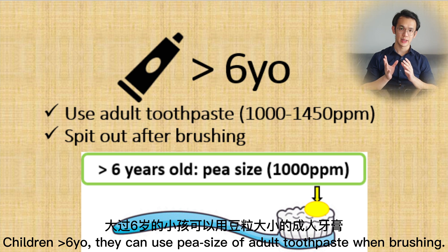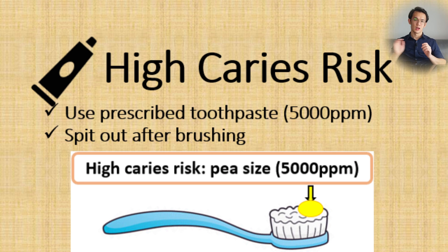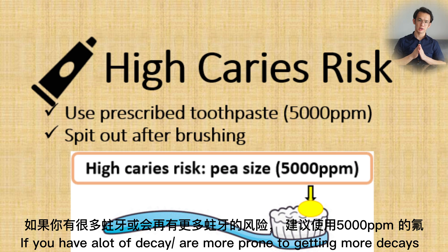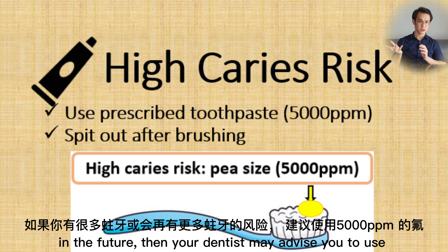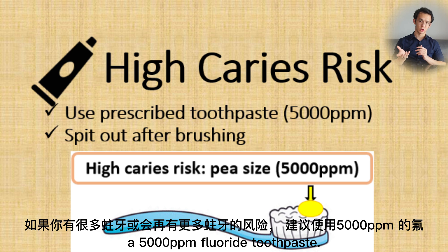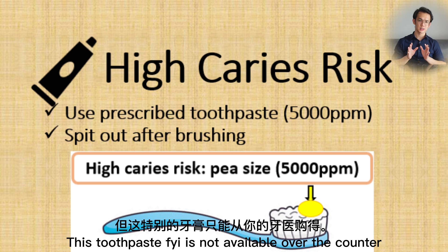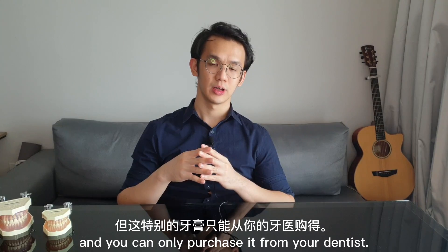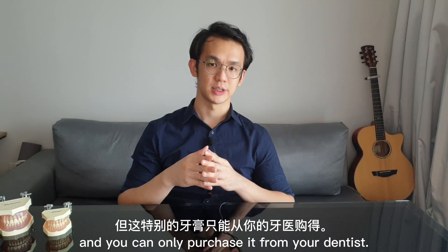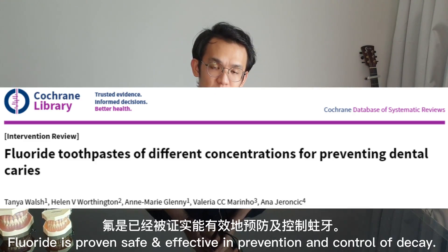Children more than six years old can use a pea-sized amount of adult toothpaste when brushing. If you have a lot of decay or are prone to more decay in the future, your dentist may advise you to use a 5000 ppm fluoride toothpaste. This toothpaste is not available over the counter — you can only purchase it from your dentist.